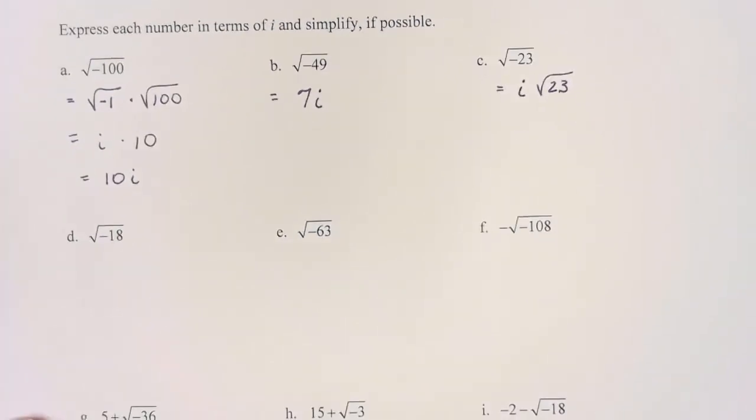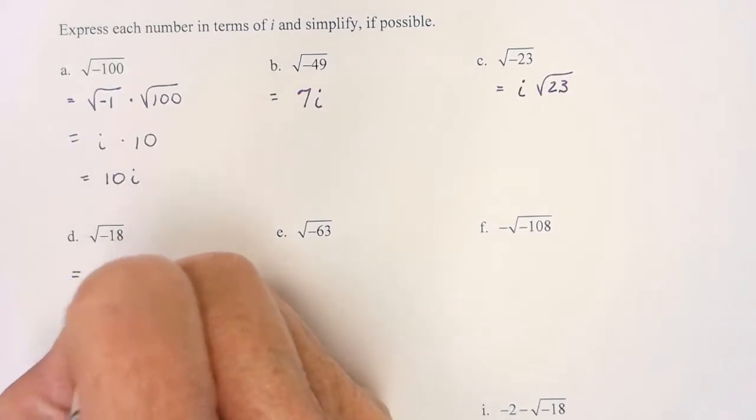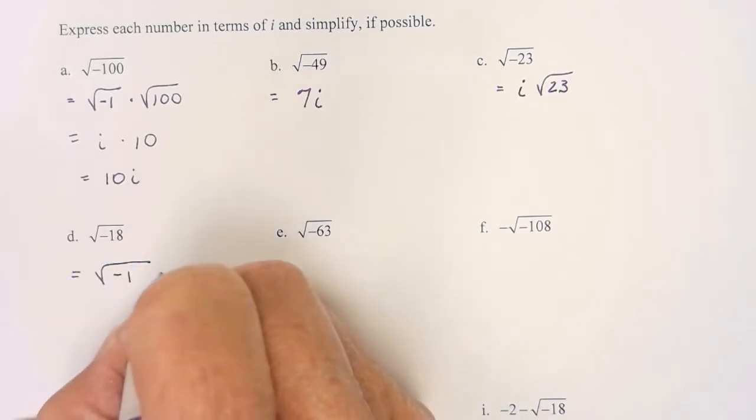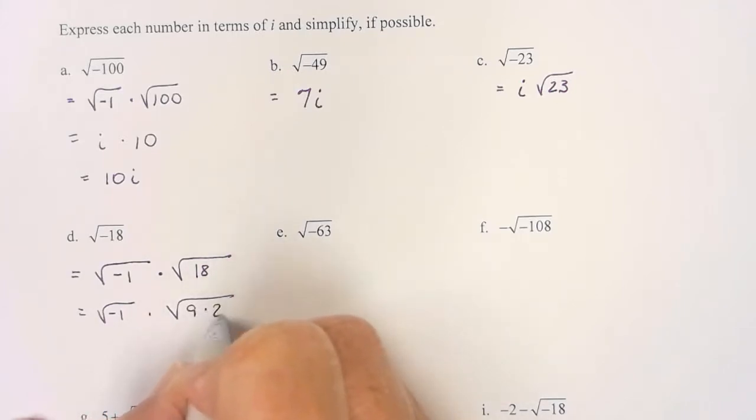Let's look at d. I know I have negative 1. I also have 18. So negative 1 times 9 times 2. This is getting me back to something I've already done.